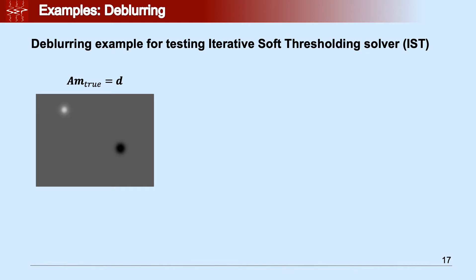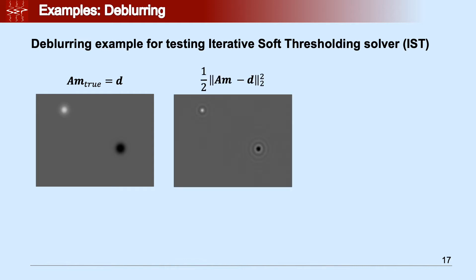In the first example, we are going to test the iterative soft thresholding solver on a deblurring case. Here we took two spikes, M2, and we smoothed with the Gaussian filter A and obtained the image D shown on the left. If we solve the L2 norm problem, it's true that we try to retrieve the energy close to the spikes, but this solution is suboptimal.